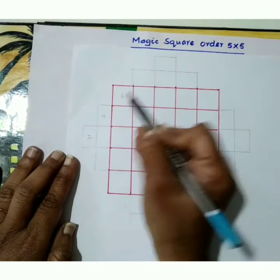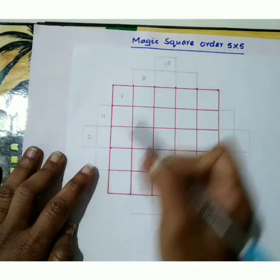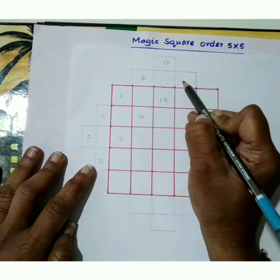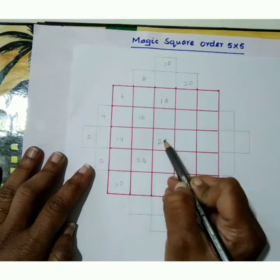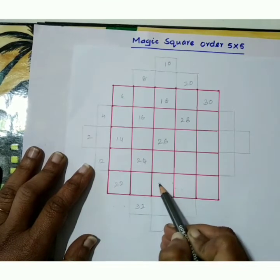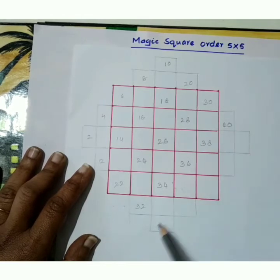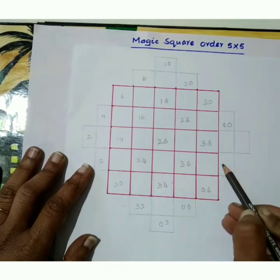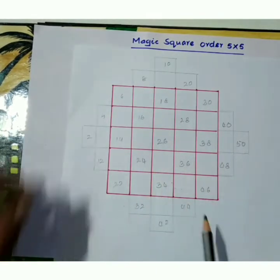2, 4, 6, 8, 10. First diagonal box completed. Second: 12, 14, 16, 18, 20, 22, 24, 26, 28, 30, 32, 34, 36, 38, 40, 42, 44, 46, 48, 50. Now let us start to shift the numbers.